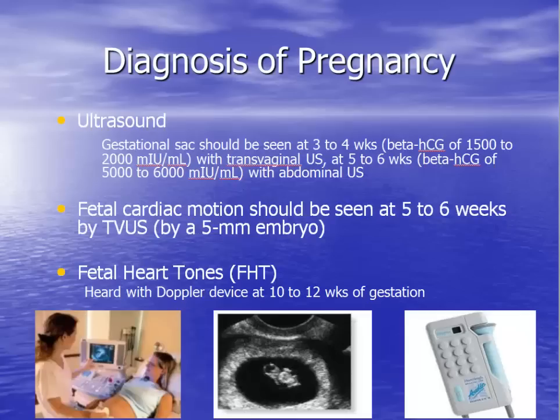Pelvic ultrasound also confirms the correct location of a pregnancy in the uterus. A healthy embryo will demonstrate a visible heartbeat by 5 to 6 weeks of gestation on transvaginal ultrasound. A handheld Doppler device can also detect the sound of the fetal heartbeat by 10 to 12 weeks of gestation.